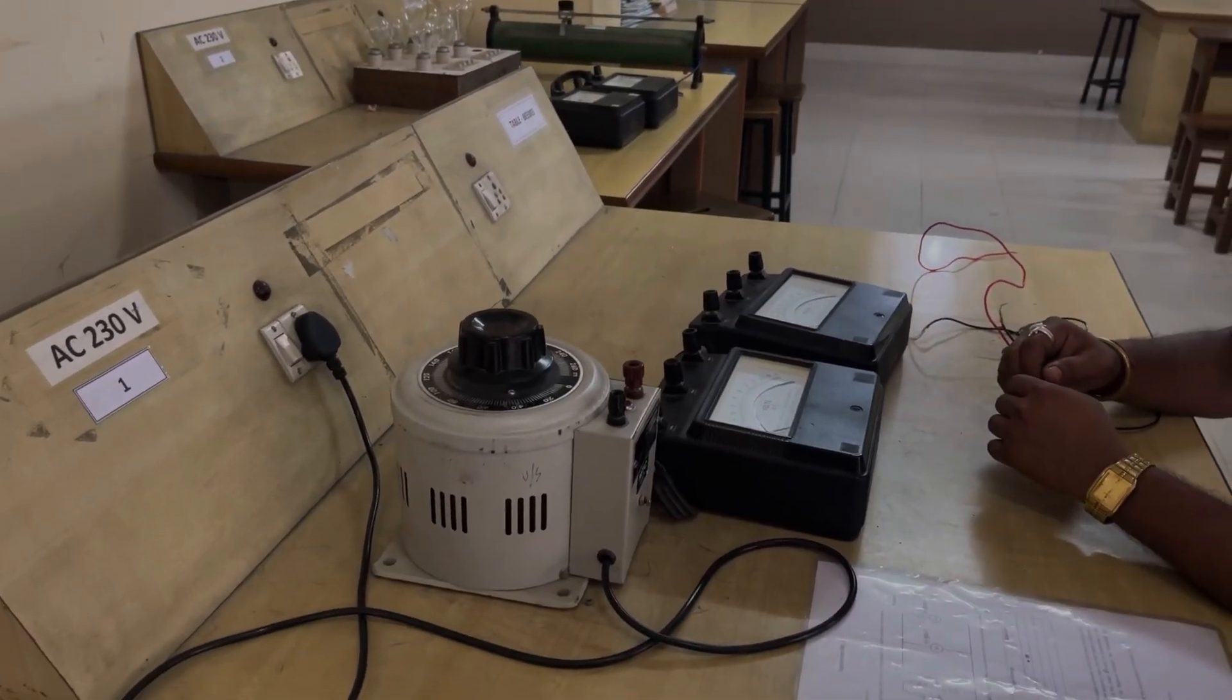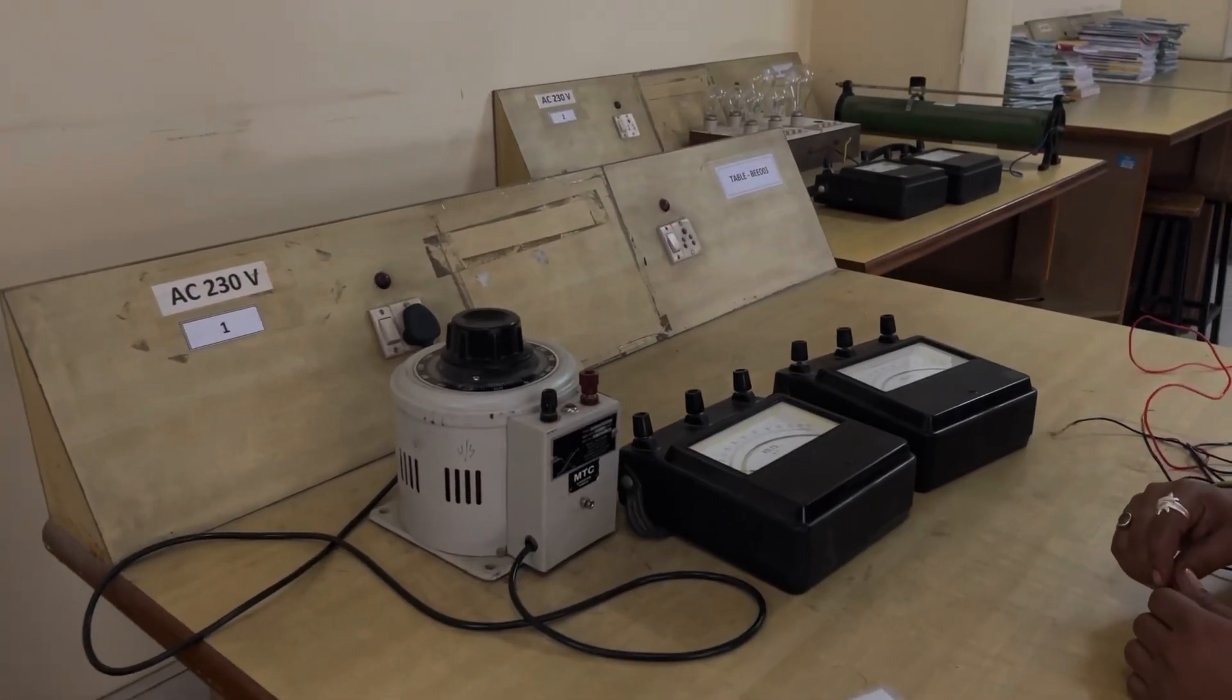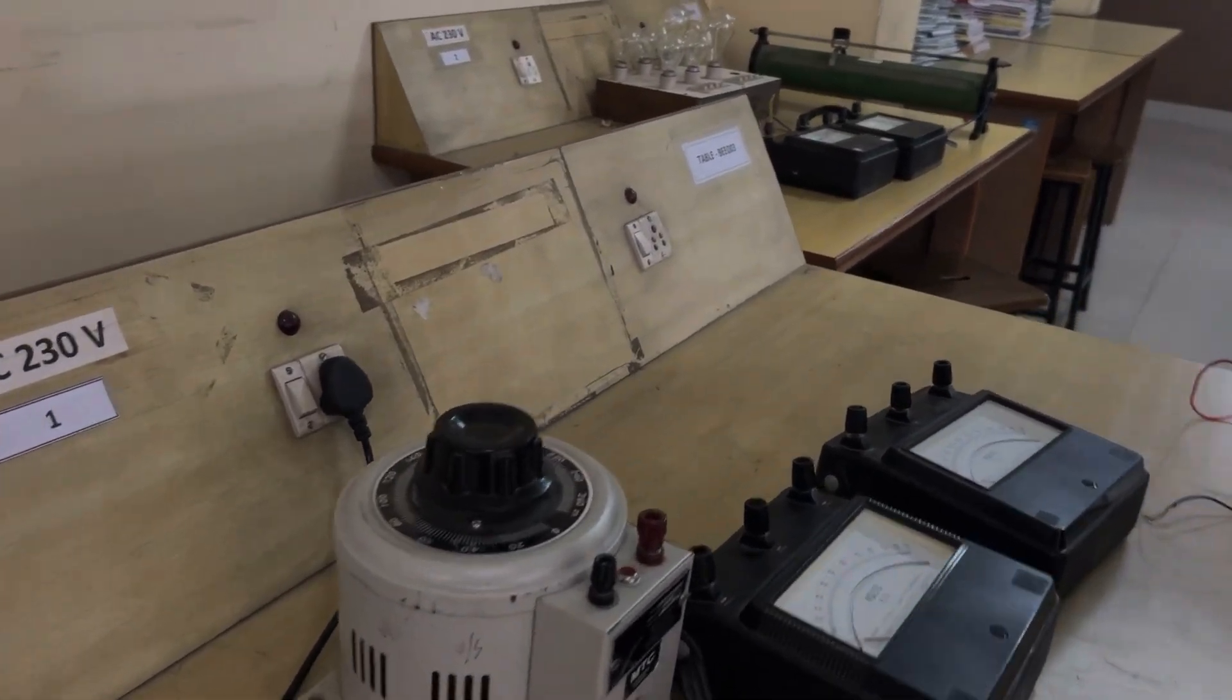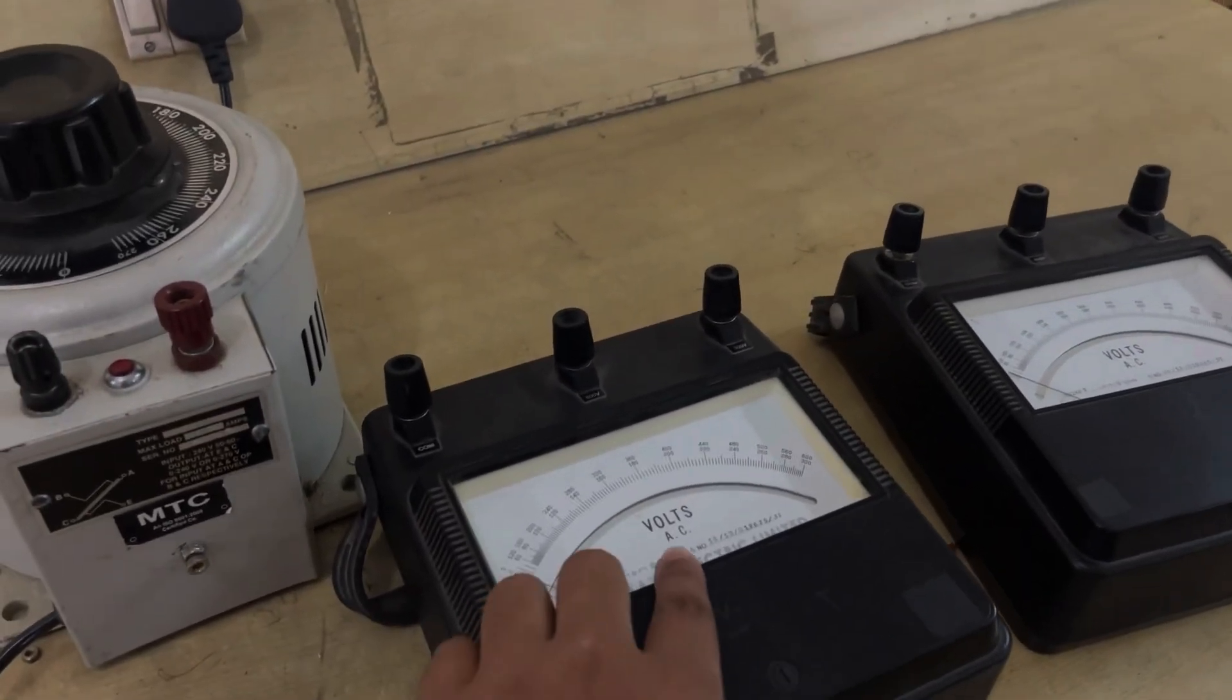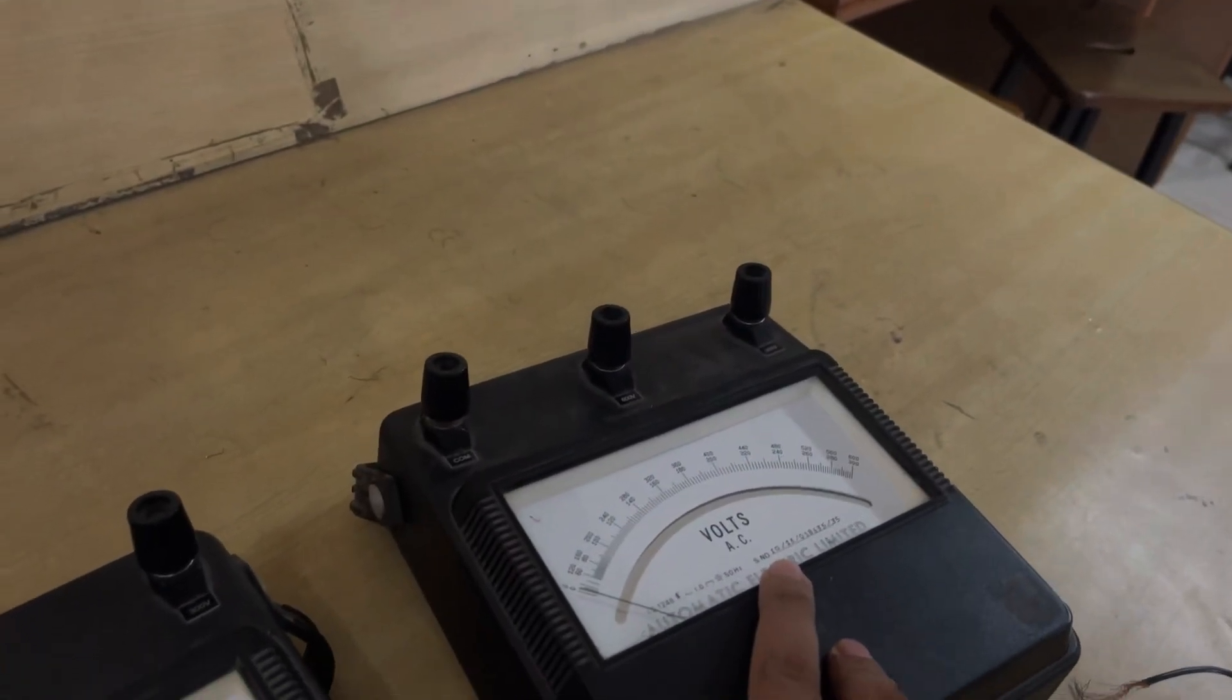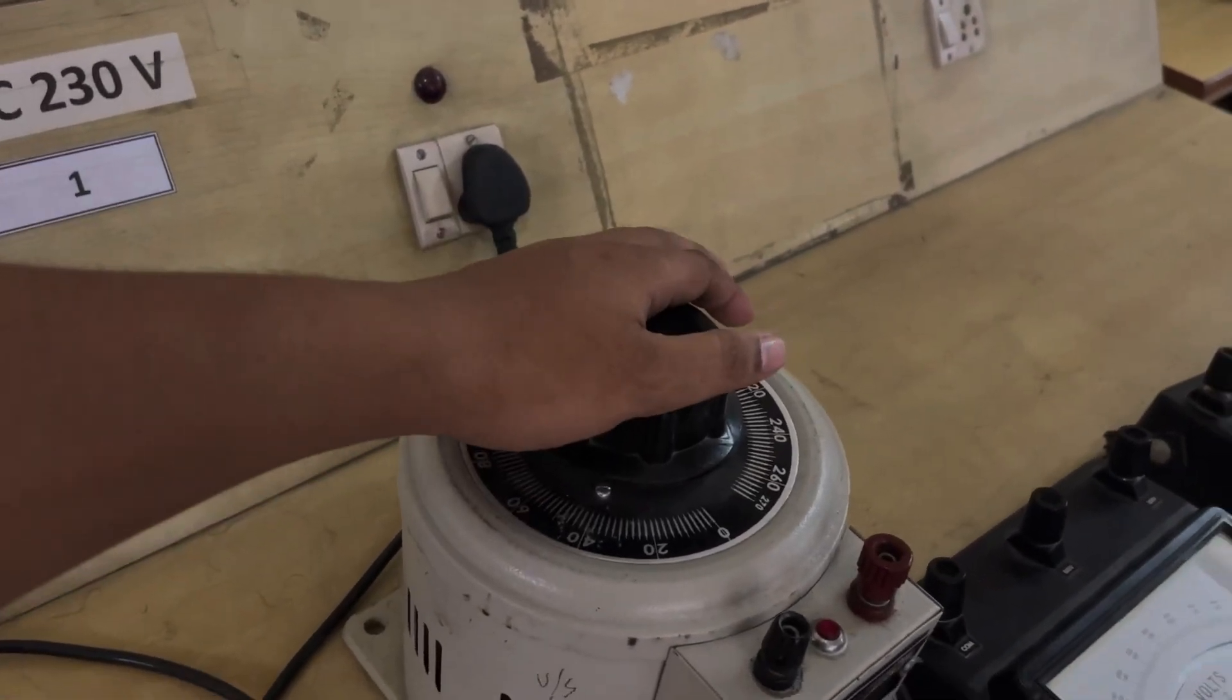Hello everyone, today we are going to do an experiment on calibration of a voltmeter. For this experiment we need two meters for voltage AC, one barrier, one auto transformer, and 230 volt supply.